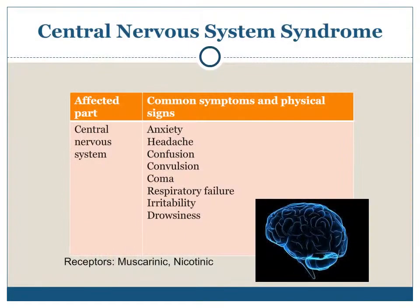Central nervous system syndrome — affected part: central nervous system. Common symptoms and physical signs: anxiety, headache, confusion, convulsion, coma, respiratory failure, irritability, and drowsiness.